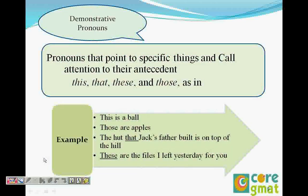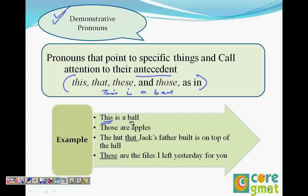The next type is demonstrative pronouns. As the name suggests, it calls attention to the antecedent — the noun already present in the sentence. The demonstrative pronouns are 'this,' 'that,' 'these,' and 'those.' For example: 'This is a ball' — 'this' refers to the ball already mentioned. 'Obviously these are the files I want you to see,' 'those are apples that I bought from the market,' 'the hut that Jack built is at the top of the hill' — 'that' refers to the hut. These are the words that call attention to the antecedent, which is already mentioned in the sentence.